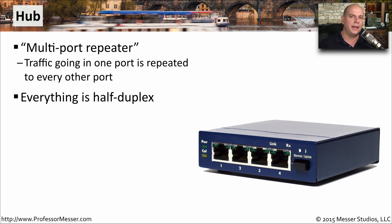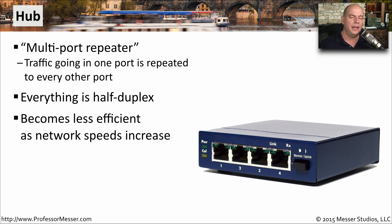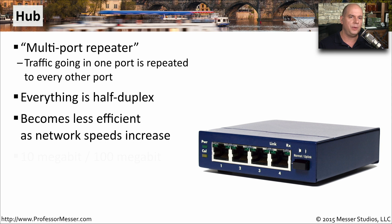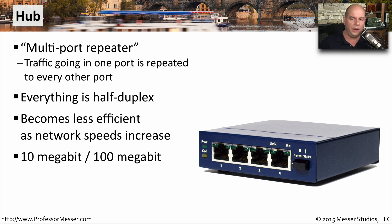A hub operates at half duplex. That means of all the devices connecting to the hub, only one device can communicate at any particular time. As you might expect, that means that as the amount of traffic increases, the amount of throughput is going to be less and less efficient. You usually see a hub communicating at either 10 or 100 megabit, especially on an ethernet network.